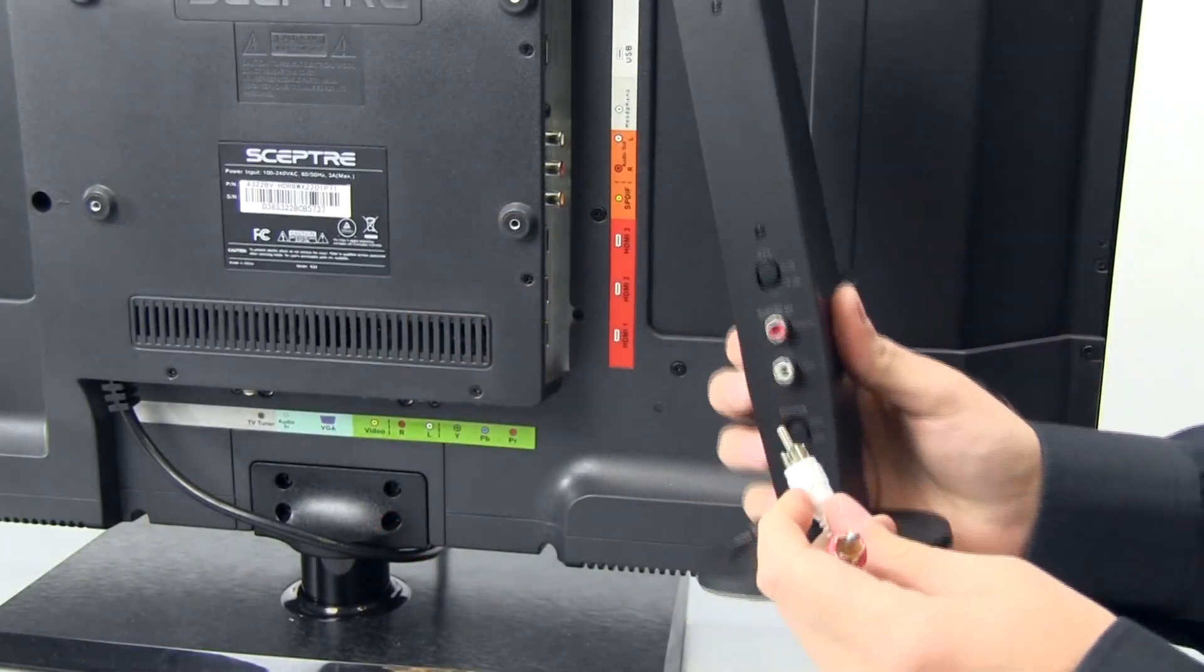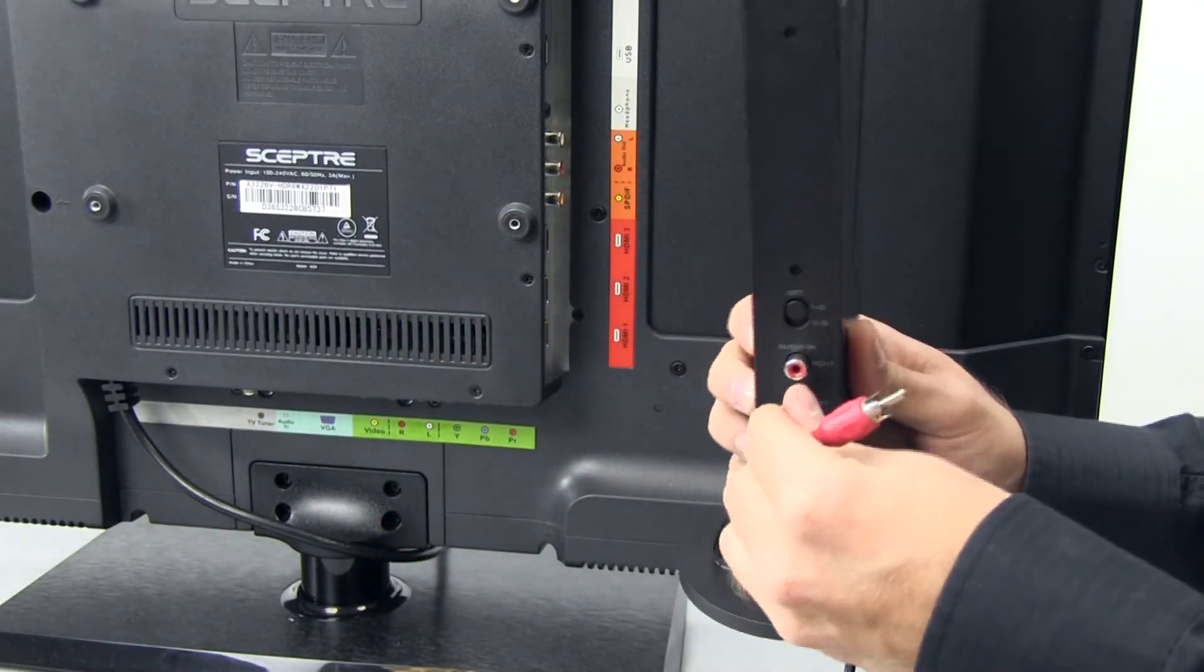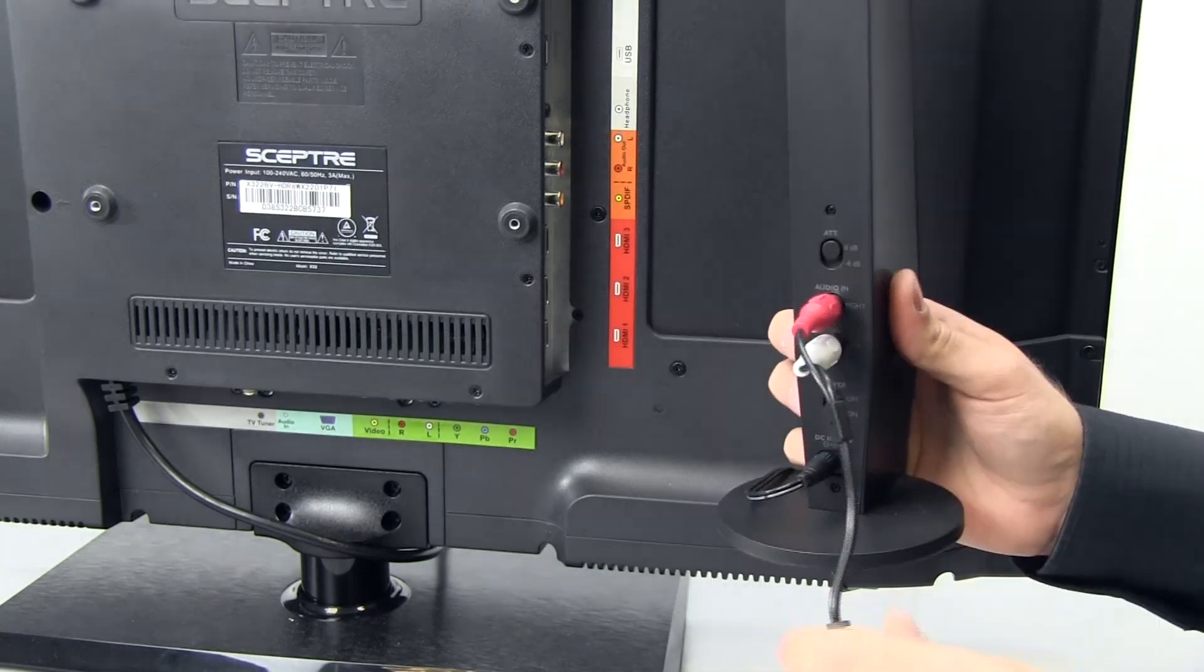Then take either end of the RCA connections, the red and white connectors, and plug that end into the transmitter's RCA audio in connections.